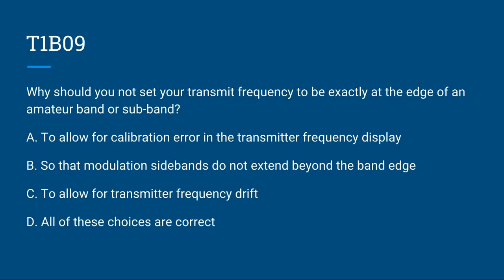T1B09: Why should you not set your transmit frequency to be exactly at the edge of an amateur band or sub-band? A, to allow for calibration error in the transmitter frequency display; B, so that modulation sidebands do not extend beyond the band edge; C, to allow for transmitter frequency drift; or D, all of these choices are correct. The correct answer is D, all of these choices are correct.